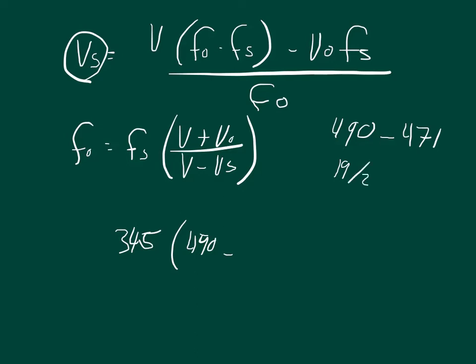And so if we divide that difference by 2, we get 9.5. And so what we can do is we can subtract 9.5 from 490. So 490 minus 9.5 equals 480.5. That's the frequency of the source. So we can put 480.5.